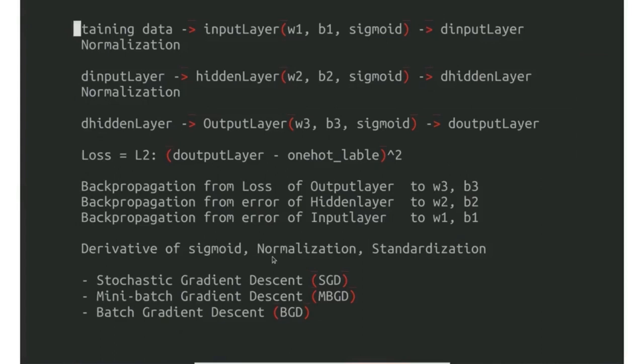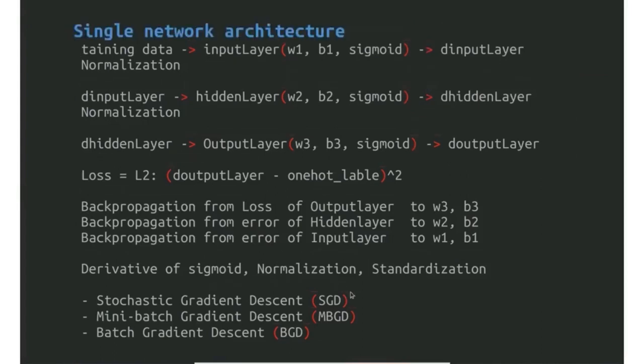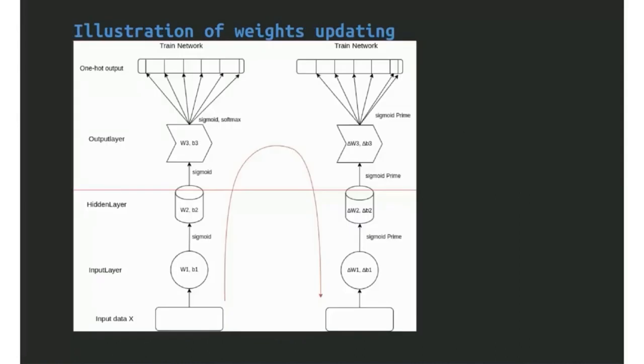Derivative of sigmoid, normalization, and standardization will be applied. Here is a problem. We have to decide, even for the single network, which algorithm we have to use to update our weights. It's called stochastic gradient descent. There will be after each instance is trained, an update for the weight. Also, one option is to train all the data, and once this is done, we update our weights.